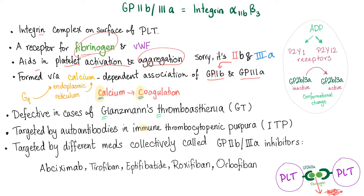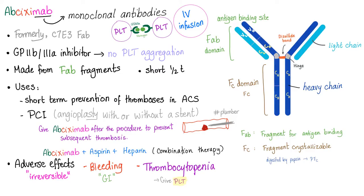Some mnemonics to help remember these drugs: the 'Six-C-mab' — Abciximab; the 'Tyrant-ban' — Tirofiban; the 'Epiphanic-tide' — Eptifibatide; the 'Roxy' — Roxifiban; and the 'Orphan' — Orbofiban. Just some mnemonics to mitigate human suffering. Let's start with Abciximab. It ends in '-mab,' which means it's a monoclonal antibody — an antibody against one specific target.